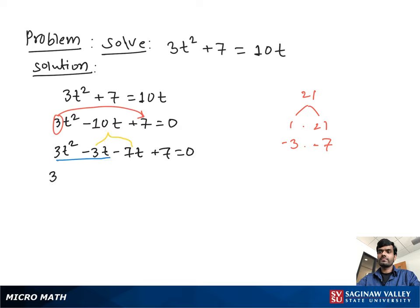From this pair we take out 3t as common and we have t - 1. From this pair we take out -7 as common and we have t - 1, all equal to 0. From both terms we take out t - 1 as common, and we have left 3t - 7, all equal to 0.